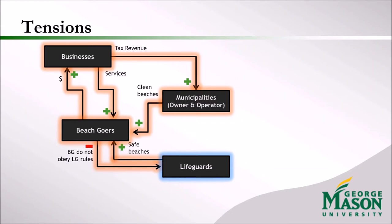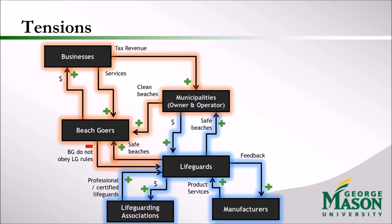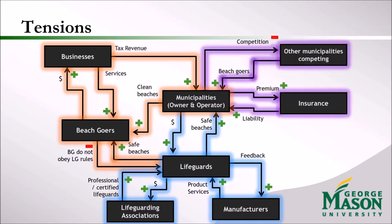There are many tensions among these stakeholders, many being positive. The municipalities use the tax revenue that the businesses pay to provide clean beaches, and the lifeguards provide safe beaches. However, the major tension is that beachgoers don't really obey lifeguard rules or regulations. The lifeguarding associations provide and train professional lifeguards, and municipalities hire these lifeguards. Manufacturers produce equipment for lifeguard and rescuing processes. Another major tension is the competition among state municipalities — whether to provide the safest beaches, the best lifeguards, or the best services or attractions.